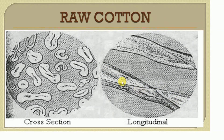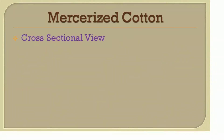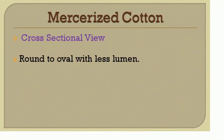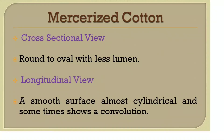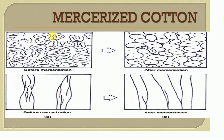Mercerized cotton has a round to oval shape in cross-section with less lumen compared to raw cotton fiber. In longitudinal view, it shows a smooth surface that is almost cylindrical and sometimes shows some convolutions. Observing the image, the cross-section is round to oval with less lumen, the longitudinal view shows a smooth surface that is almost cylindrical in shape, and it has fewer convolutions than raw cotton.